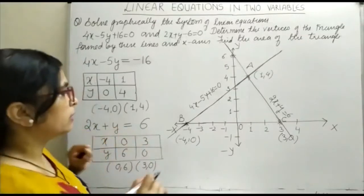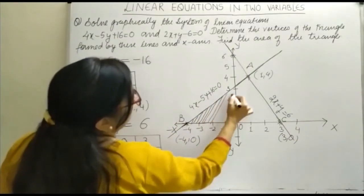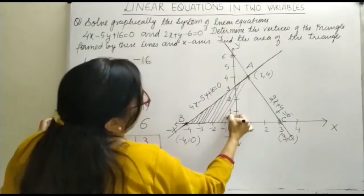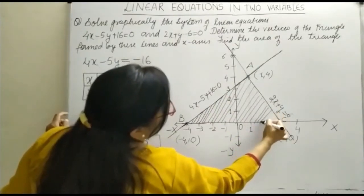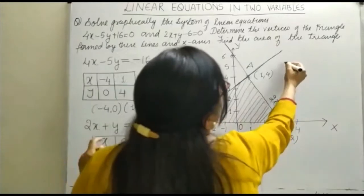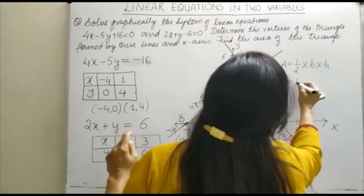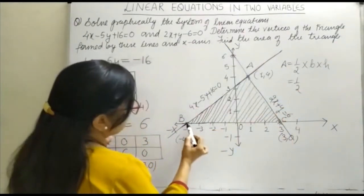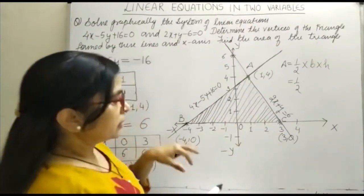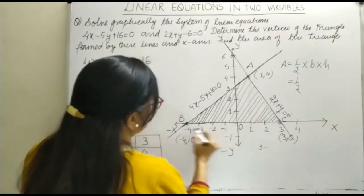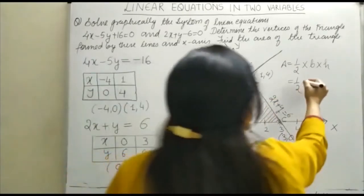Area of the triangle is half base into height. If the question asks you to shade the area, shading will be done this way. This is the shading of the triangle. Area equals half base into height. For the base, count from here to here: 1, 2, 3, 4, 5, 6, 7. Another way: 3 minus minus 4 gives you 7. So the total length of base BC is 7.